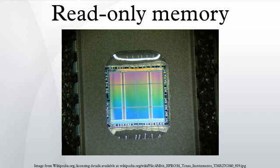Writing: for those types of ROMs that can be electrically modified, writing speed is always much slower than reading speed, and it may need unusually high voltage, the movement of jumper plugs to apply write-enabled signals, and special lock and unlock command codes. Modern NAND flash achieves the highest write speeds of any rewritable ROM technology, with speeds as high as 15 megabytes per second, by allowing large blocks of memory cells to be written simultaneously.